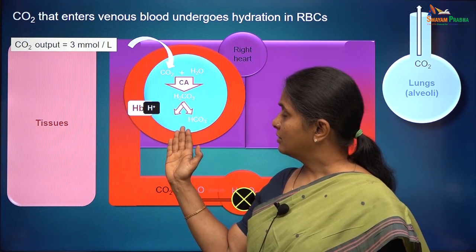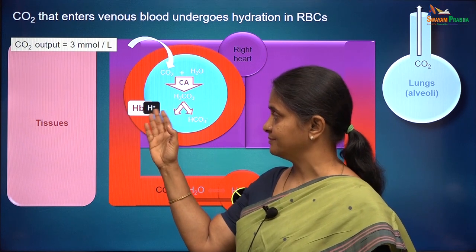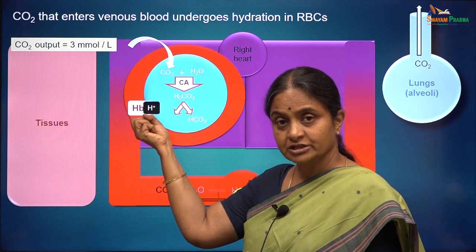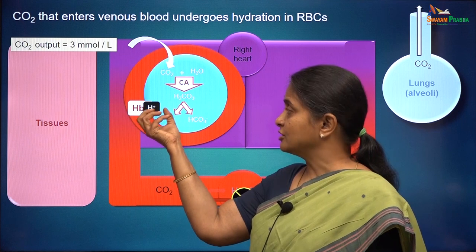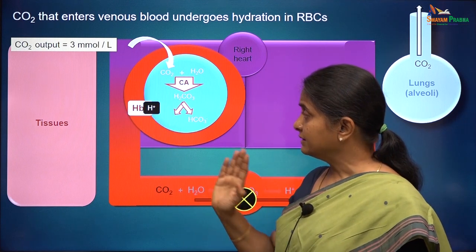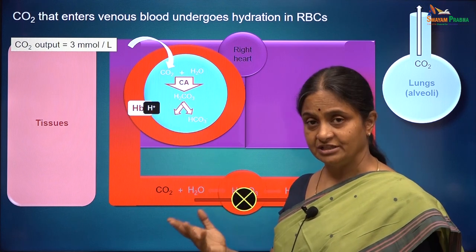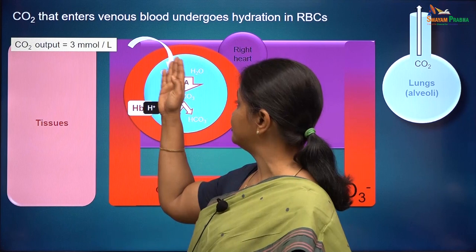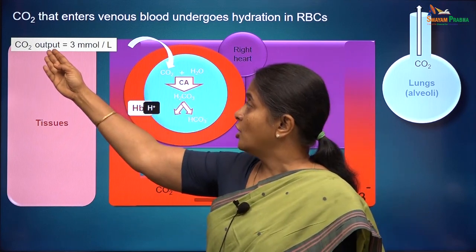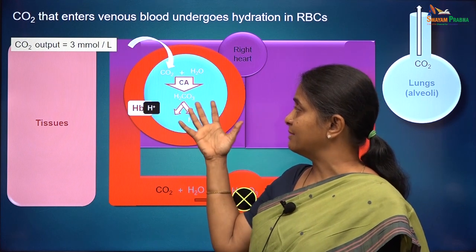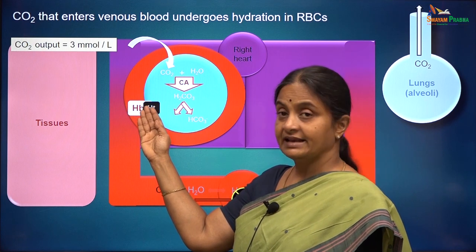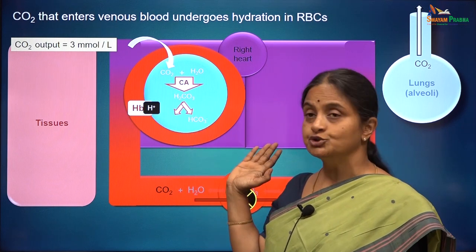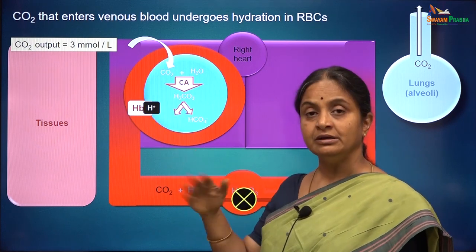It is not enough for hydrogen ions alone to be removed from the system. Hemoglobin has bound the free protons and buffered the acidity — it has not allowed pH to drop. But that alone is not enough unless we also remove bicarbonate from the system; otherwise bicarbonate would build up and the reaction could not proceed further. We want the reaction to continue so that all the carbon dioxide from tissues is handled by red blood cells, allowing those protons to combine with hemoglobin.